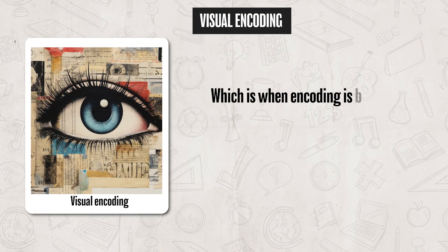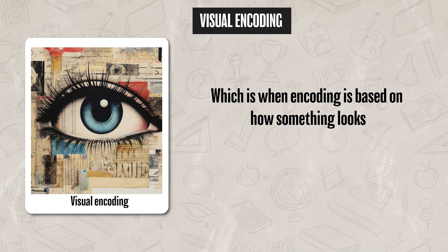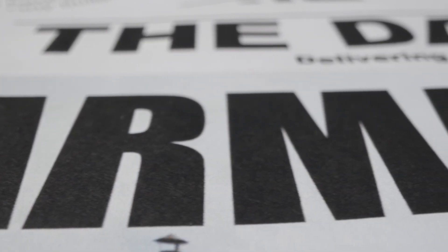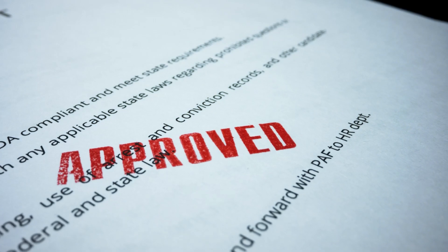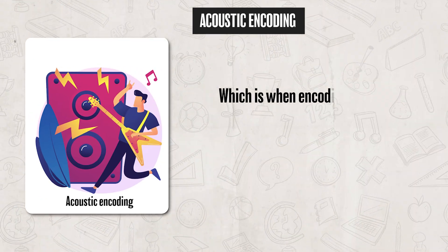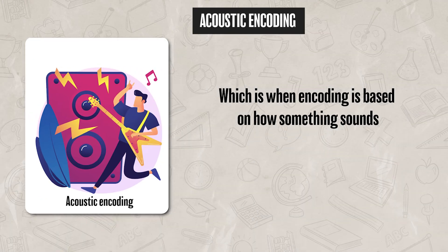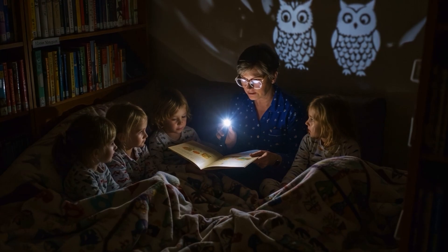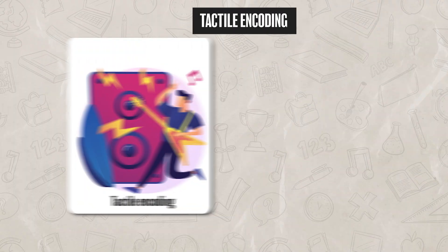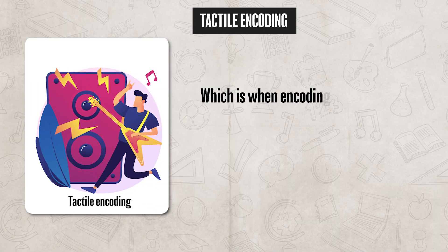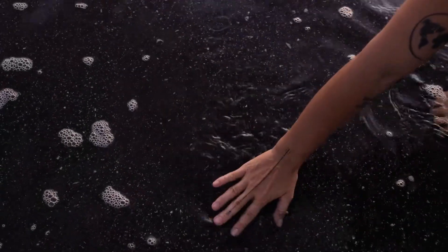Those are the different levels of encoding, but there are also different ways in which we can encode information. The first is visual encoding, which is based on how something looks, like remembering the color of the text on the screen or if a word was written in all capital letters. Next, there is acoustic encoding, based on how something sounds — for example, using rhymes. Lastly, there's tactile encoding, based on the feeling of touch, such as remembering the texture of an item.